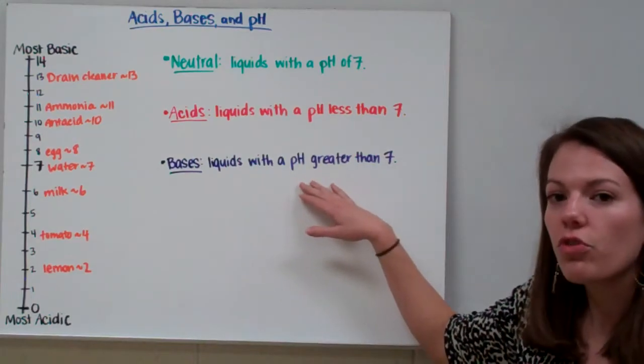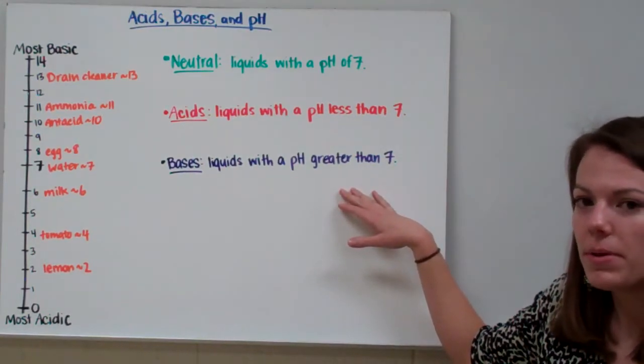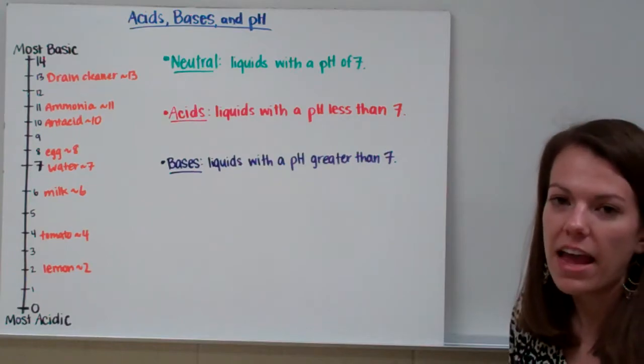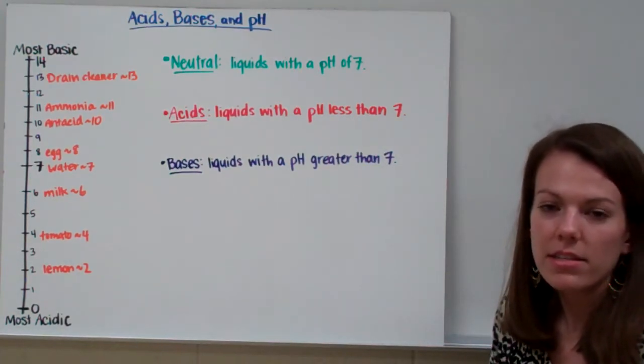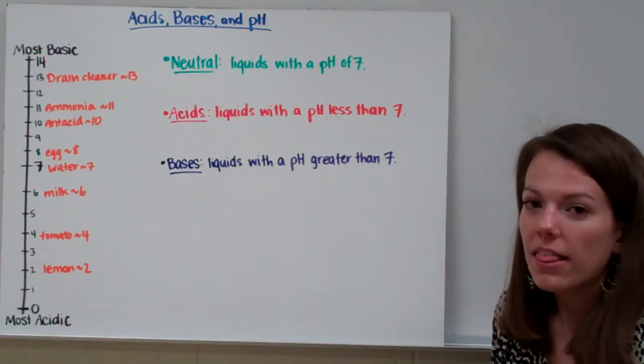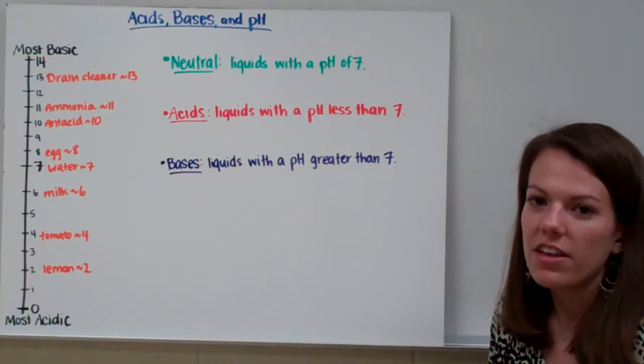Liquids with a pH greater than 7 are said to be bases. So anything with a pH of 8, 9, 10, 11, 12, 13, or 14 are all bases. Remember, 7 is neutral, less than 7 is an acid, greater than 7 is a base.